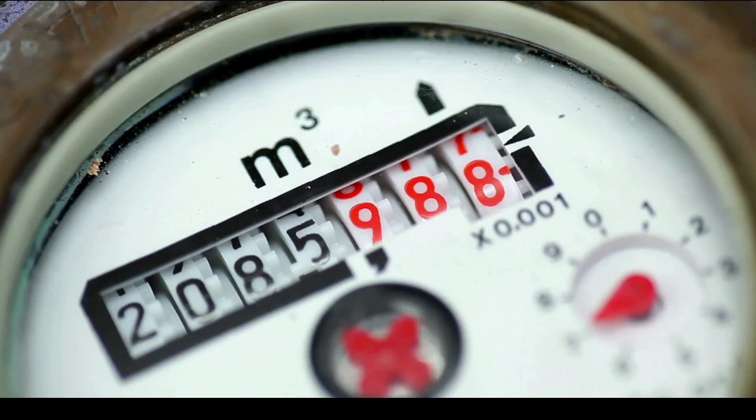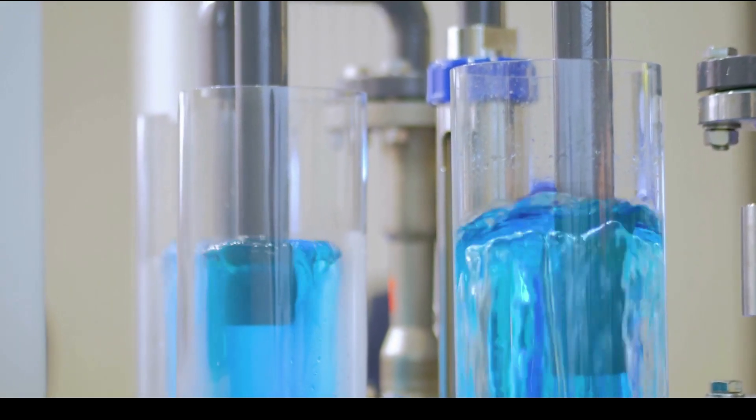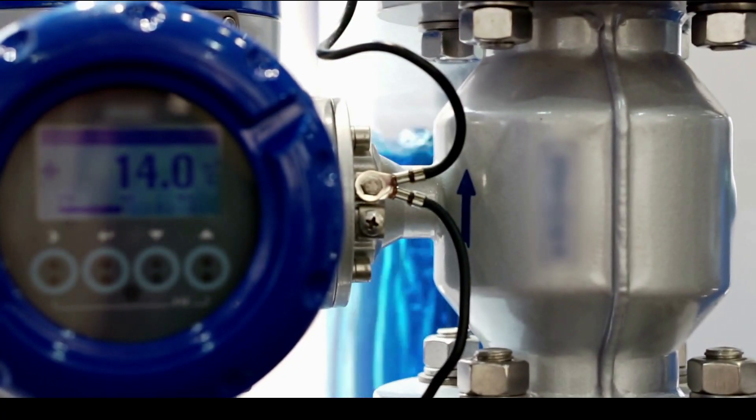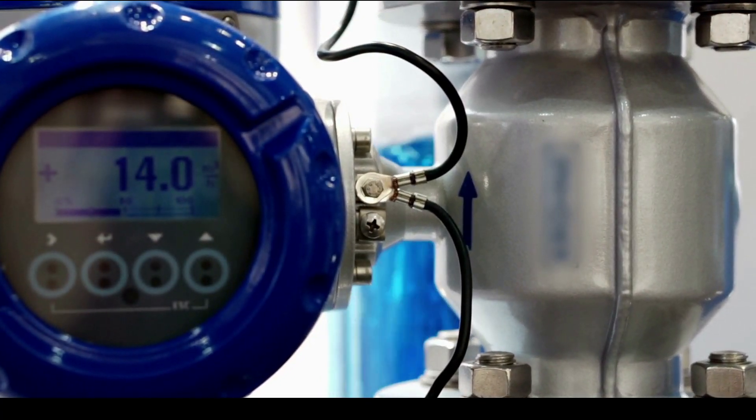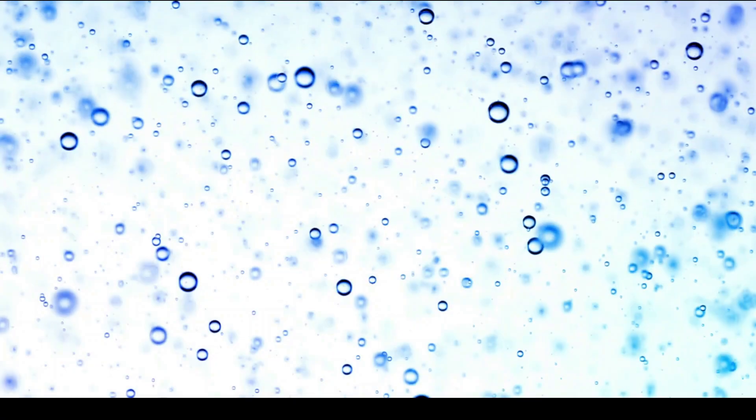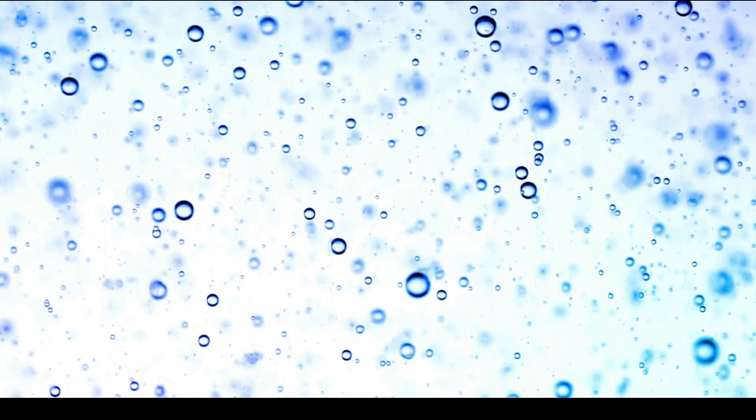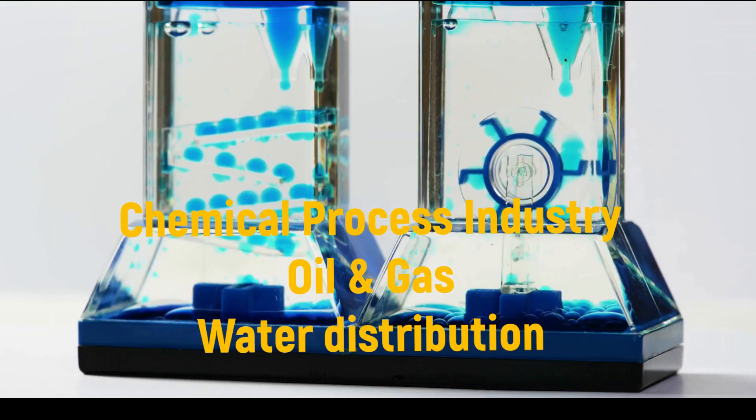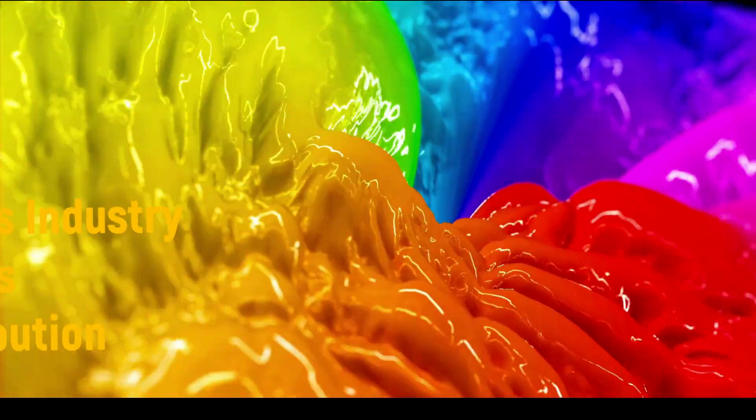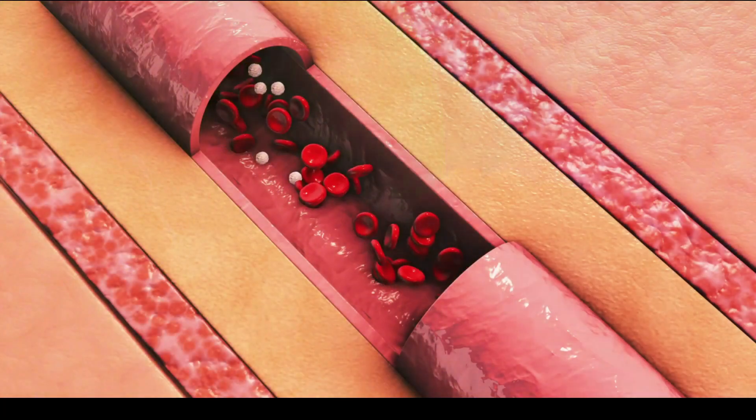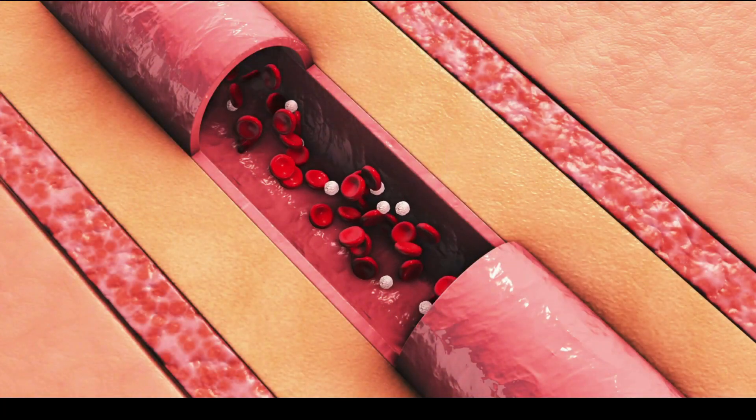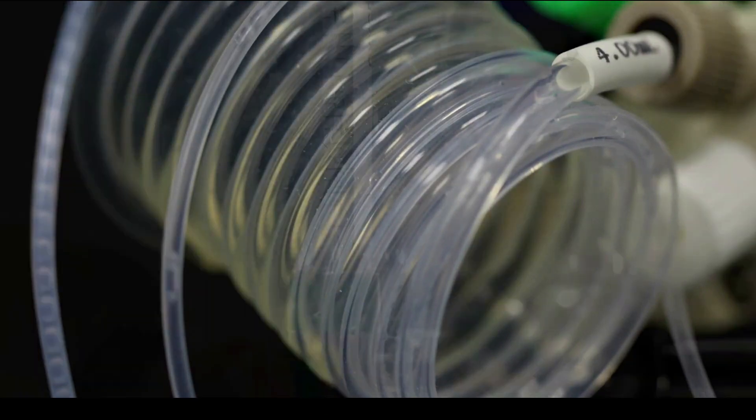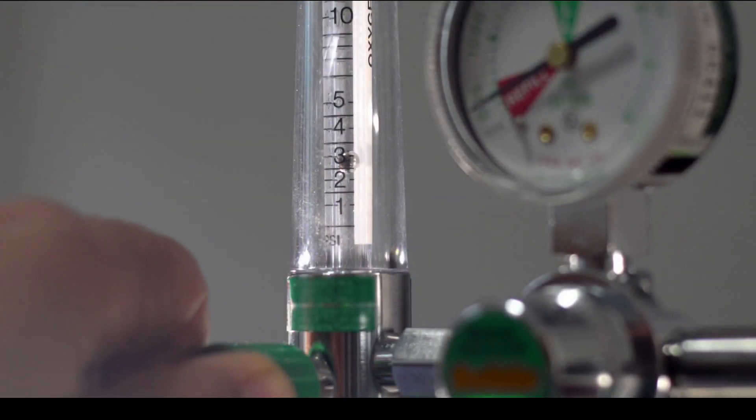So let's get started. Before we jump into the details, let's first understand why we need to measure the flow rates of fluids. In various industries such as chemical process industry, oil and gas, even water distribution, accurate measurement of fluid flow is crucial for process optimization and efficiency. That's where devices like venturimeter and flow nozzle flow meters come into play.